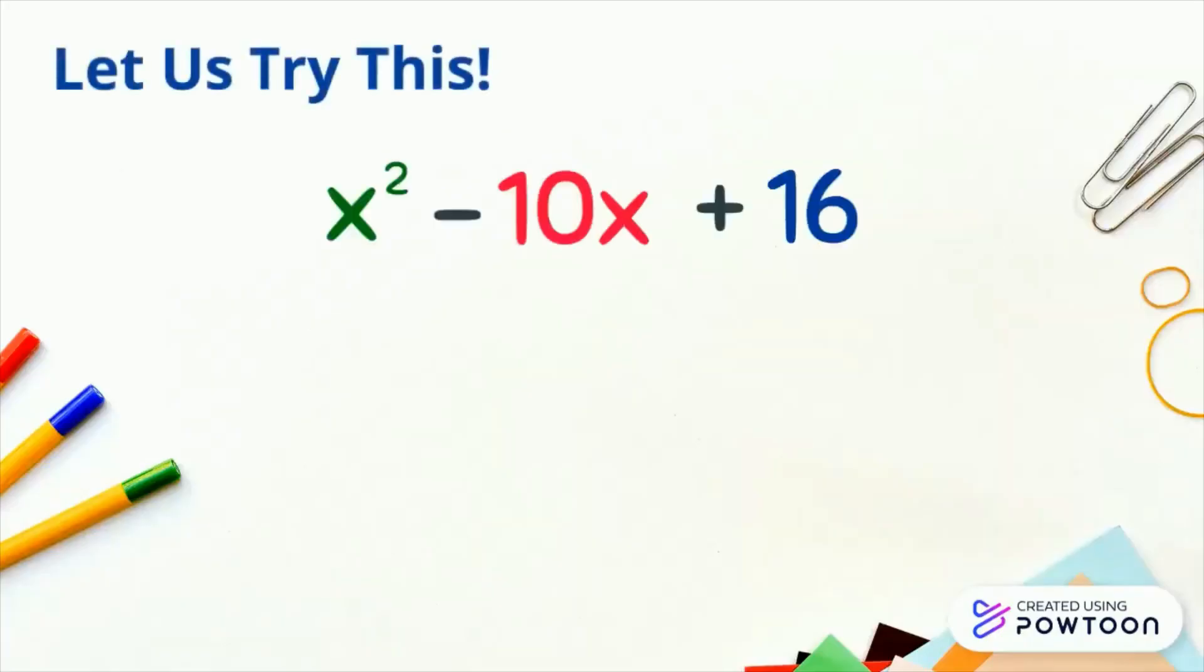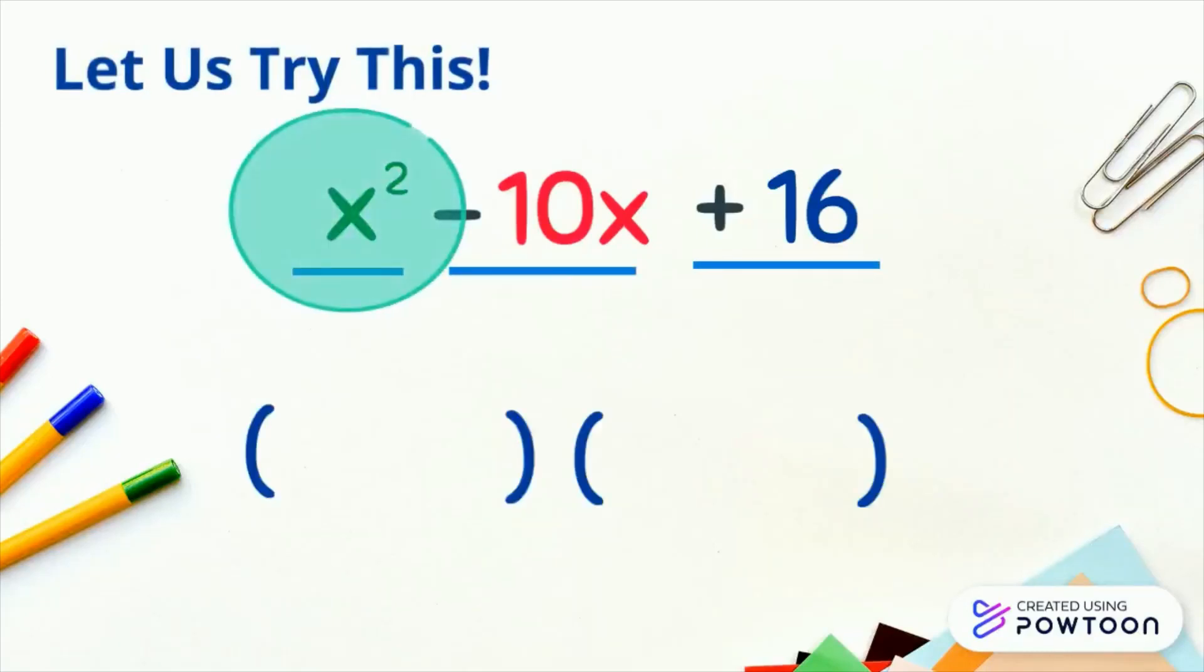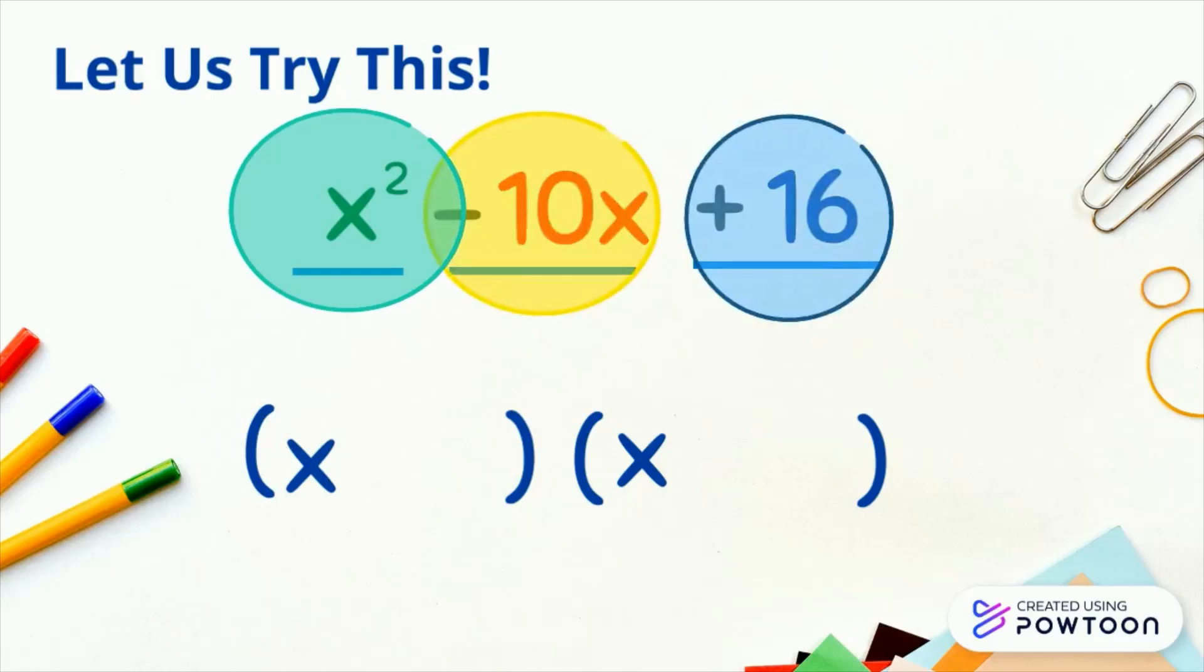Let us try another. x squared minus 10x plus 16. The factors of x squared are x and x. The factors of positive 16, where b is negative 10, are negative 8 and negative 2.